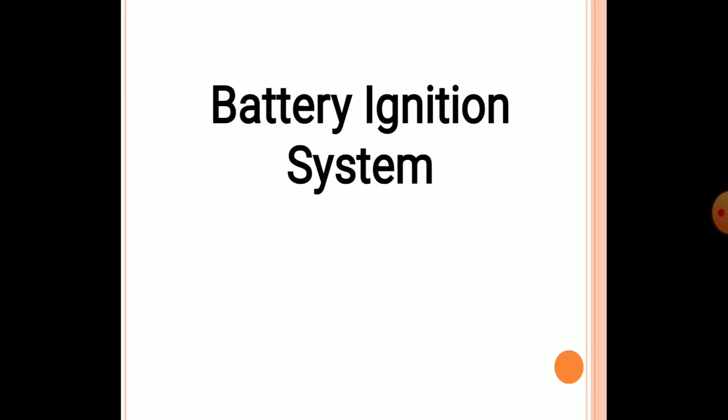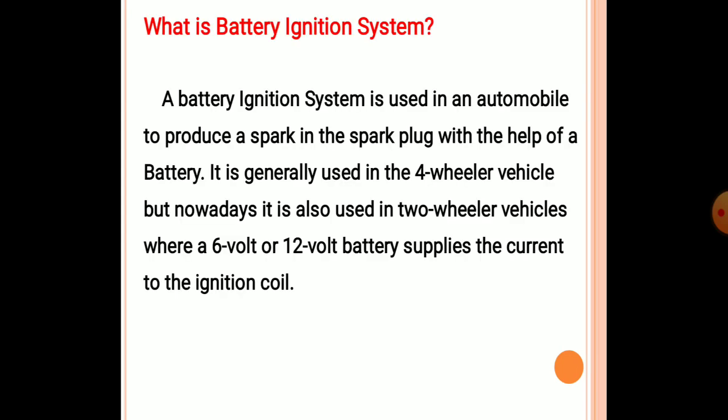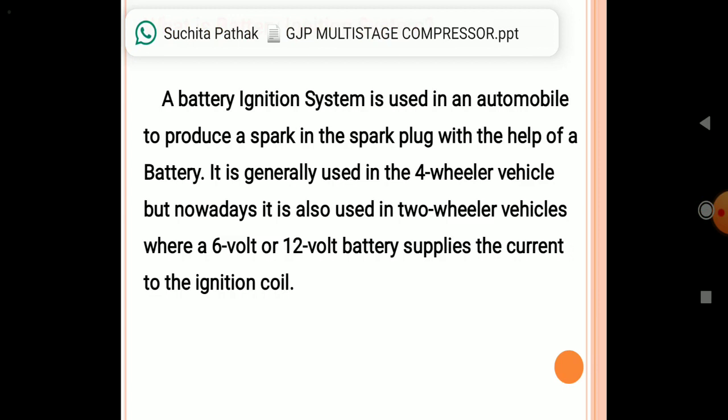A battery is an energy storage device that stores energy and can be utilized when required. Using this stored energy, we can adopt various systems. In this subject, we mostly use the battery in the ignition system of an IC engine. It is mostly used in four-wheelers, but nowadays it is used in two-wheelers also. The battery ignition system is used in automobiles to produce sparks in the spark plug, generating stored energy to run the cycle smoothly.